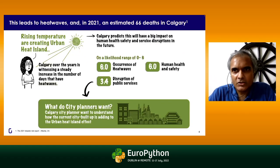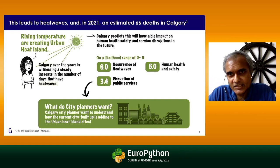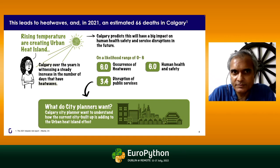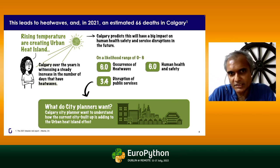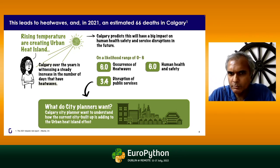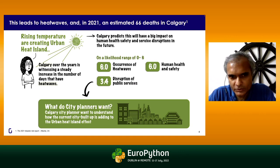The net impact is that urban areas are much hotter than rural areas — and this can cause deaths, literally. In 2021, Calgary estimated as many as 66 deaths directly traceable to heat waves and urban heat. This has been increasing year over year. Heat waves, human health and safety, and disruption of public services are all part of the problem. Calgary wants to understand how it is contributing to this and what interventions can reduce it.